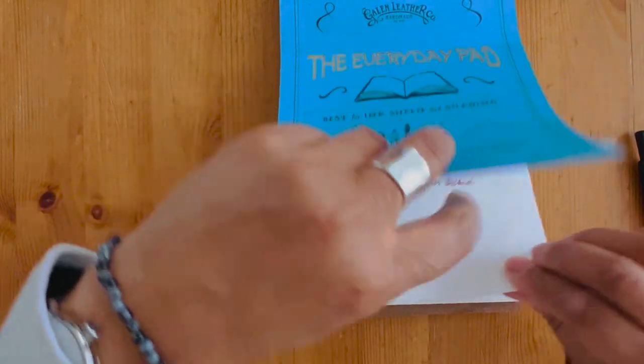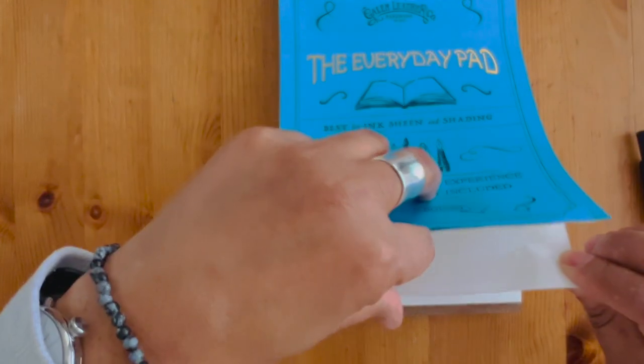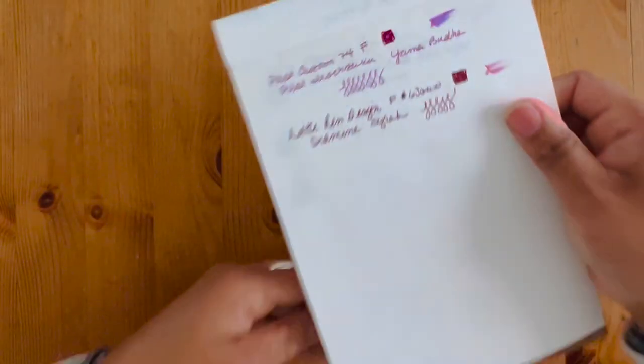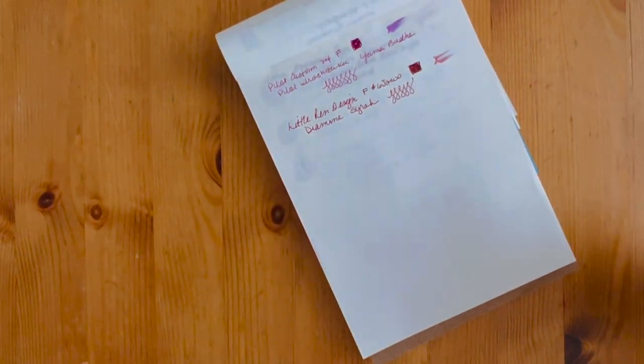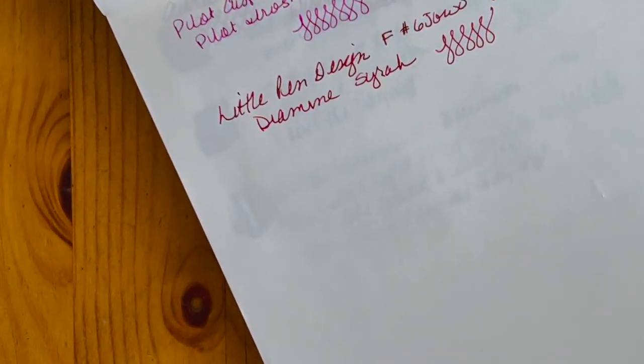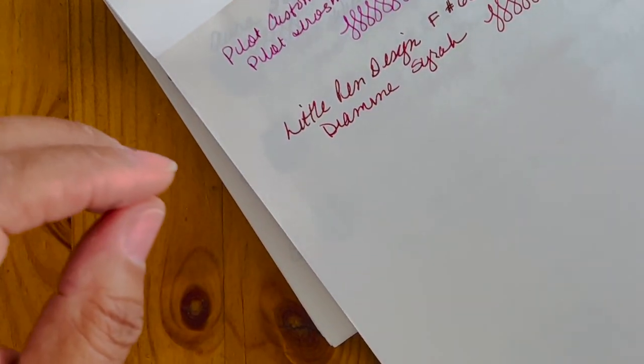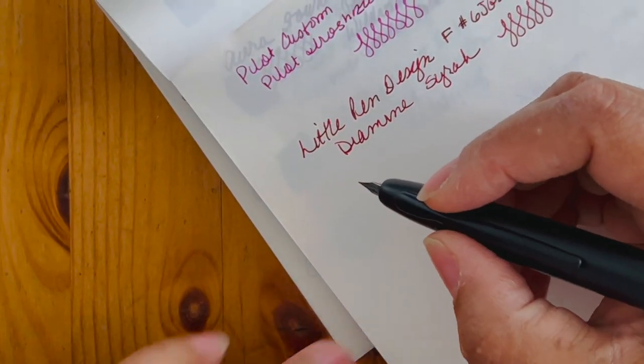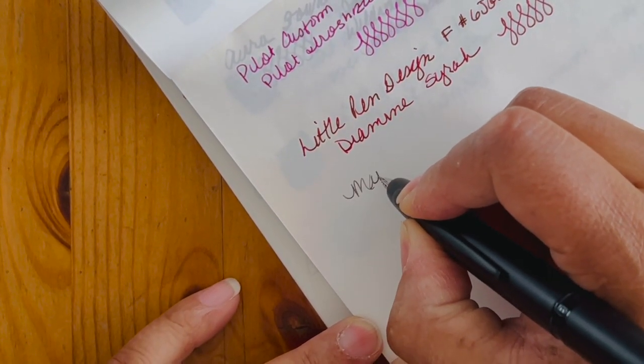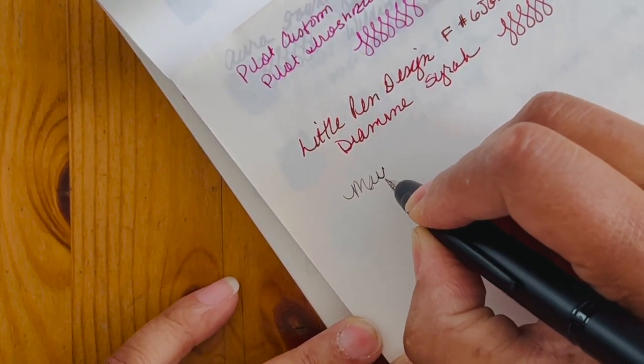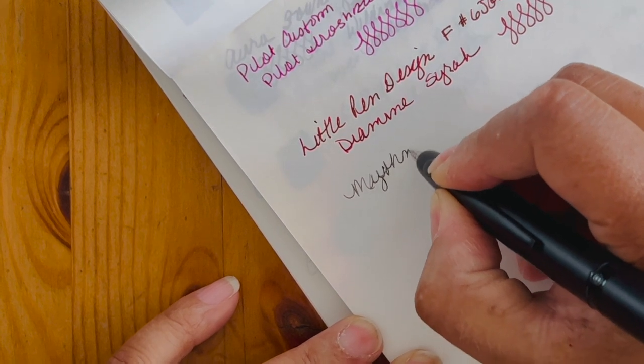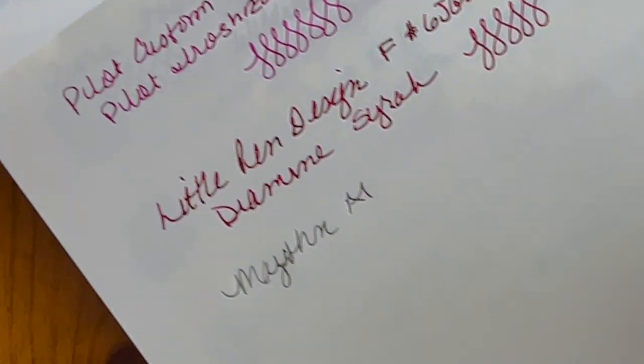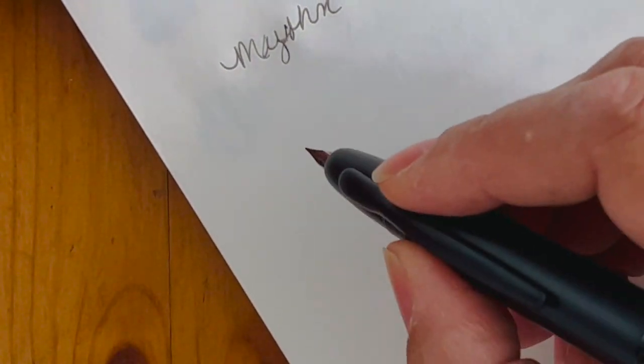I'm going to just use my Tomoe River Galen Leather notepad. I still have room in this one. Let's zoom in and let's see how this one works. So this is the Majohn. Oh, very smooth. A1.